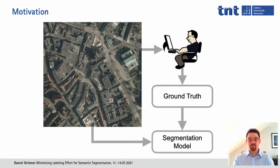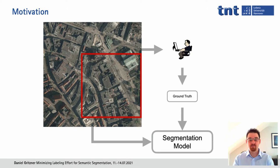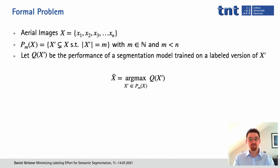So we wanted to look at the problem from a different point of view. What if we could identify a subset of our input images so that if we only labeled that subset, we could still train a performant model? Formally, we have the set X of aerial images x1 to xN, the set Pm(X) of all subsets of X of length m, and q(X') which is the performance the segmentation model would reach if trained on a labeled version of X'. We want to identify the entry in Pm(X) that maximizes performance — we want X-tilde, a subset of X such that labeling X-tilde gives us a very performant model.